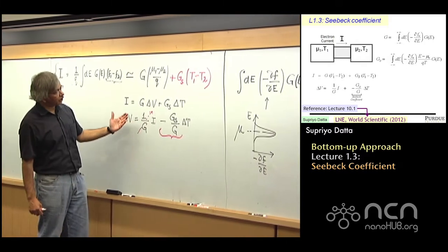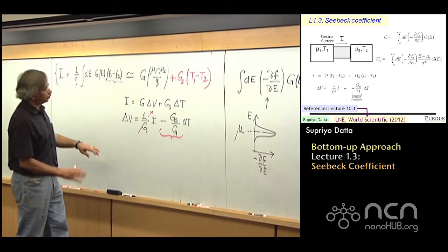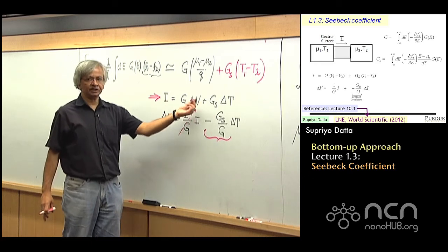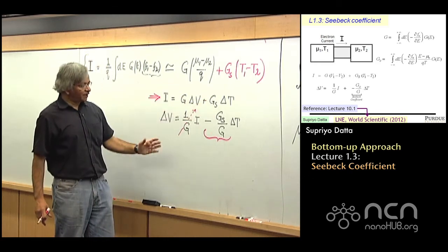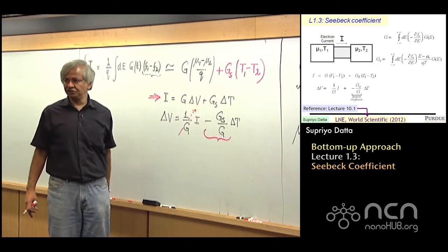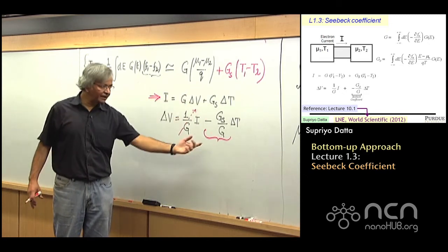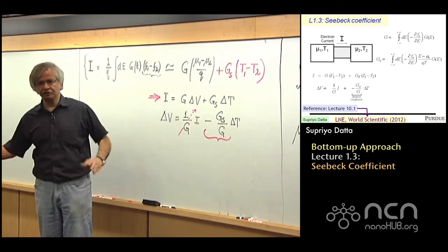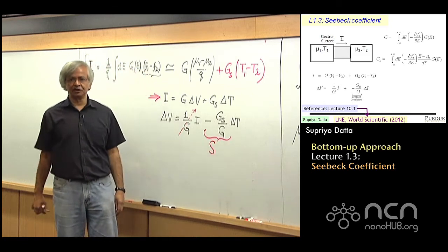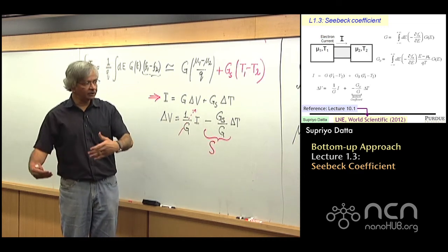To calculate the Seebeck coefficient: if you know the conductance function G(E), the first expression gives G and the second gives GS. What you compare with experiment is the ratio GS/G. The coefficient GS by itself has no standard name or symbol, but the Seebeck coefficient S = −GS/G is well-established — named after the person who first measured it. This is what you'd find by looking up different materials, and what you compare with experiment.